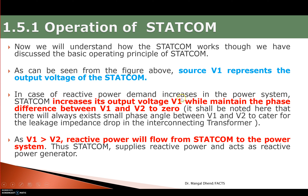When reactive power demand of the transmission system increases — for example, during peak or full load — the reactive power generated in the generating system is less than the demand. In such a case, STATCOM must generate and supply reactive power to the system. So when reactive power demand increases, STATCOM increases its output voltage V1 so that power flows from STATCOM to the system.